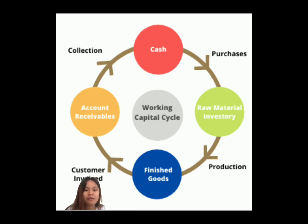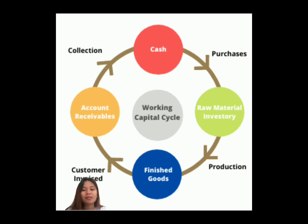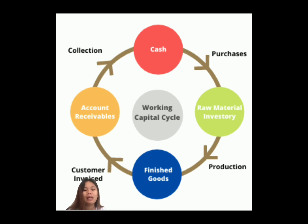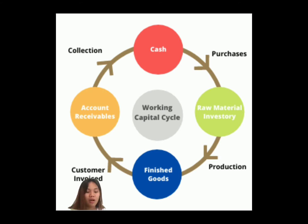For a healthy working capital cycle, it is essential for businesses to maintain the following points. Sourcing of raw materials is the starting point for most firms. It should be ensured that the raw materials needed for producing the desired goods are available at all times. In a healthy working capital cycle, manufacturing should ideally never stop due to a shortfall of raw materials.